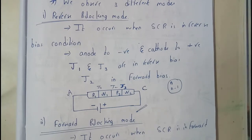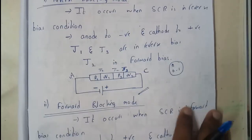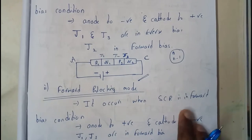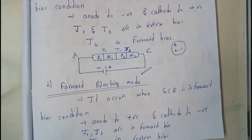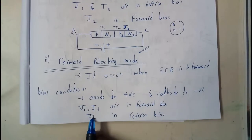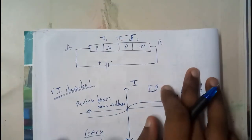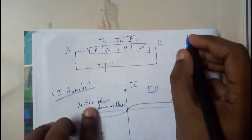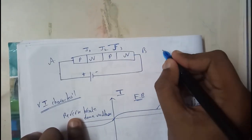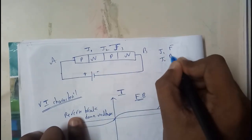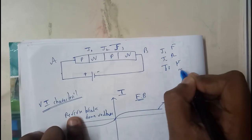Now let's go through Forward Blocking Mode. It occurs when SCR is in forward bias condition — anode is positive and cathode is negative. In this case, J1 and J3 are in forward bias and J2 is in reverse bias. You can verify: positive to P and negative to N makes J1 forward bias, J2 reverse bias, and J3 forward bias.